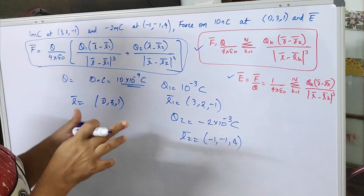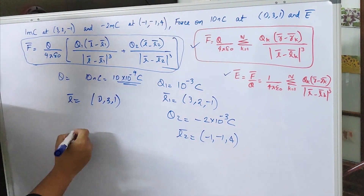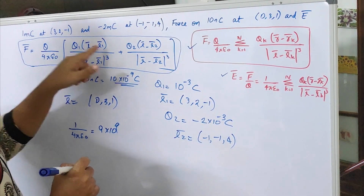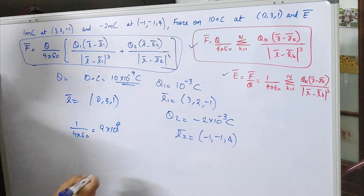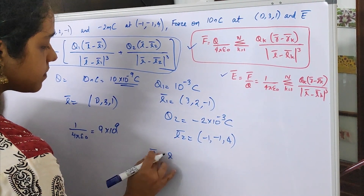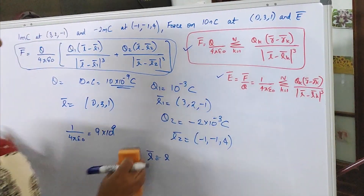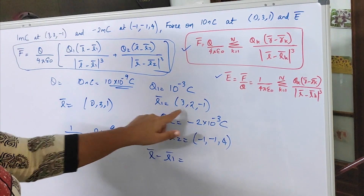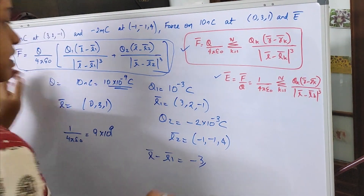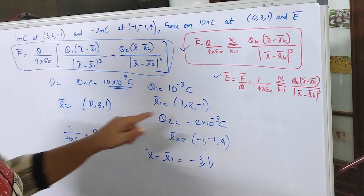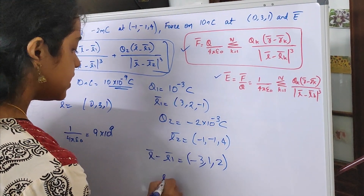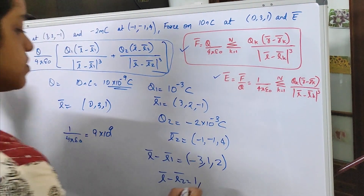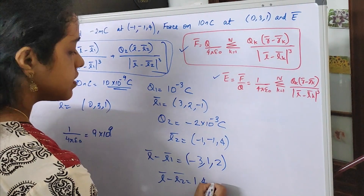The calculation is lengthy so only the substitution will be shown. 1 by 4 pi epsilon 0 can be given as 9 times 10 raise to 9. Vector r minus r1 will be (0 minus 3, 3 minus 2, 1 minus minus 1), that is (minus 3, 1, 2). Vector r minus r2 will be (0 minus minus 1, 3 minus minus 1, 1 minus 4), that is (1, 4, minus 3).